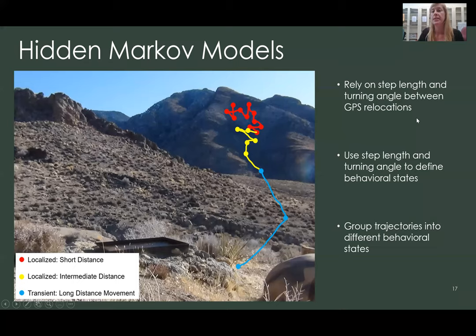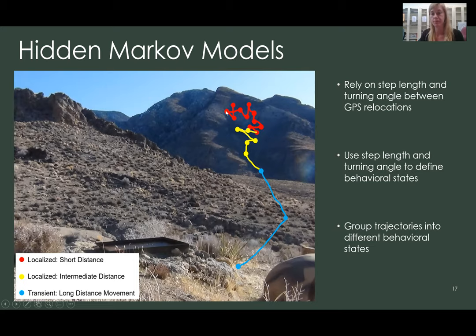With our GPS data we ran a hidden Markov model. The way it works is that it relies on step length and turning angles between GPS relocations to define different movement behavior states, then groups trajectories into those states. In a cartoon example: relocations with short steps and high turn angles are categorized as localized short distance; intermediate step lengths with slightly lower turn angles are intermediate localized; and long step lengths with low turn angles are long-distance movements.